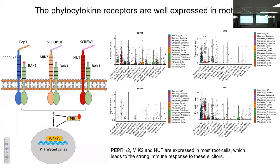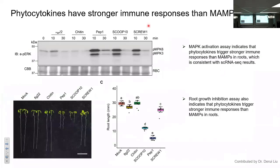We checked the expression of the PEP1 receptor PEPR1, PEPR2, the SCOOP receptor MYK2, and the SCRU1 receptor NUTS in single cells. We found that these receptors are expressed in most root cells, so they could trigger a stronger immune response. A MAP kinase activation assay also confirms that the three phytocytokines can trigger stronger immune responses in roots than the MAMPs.